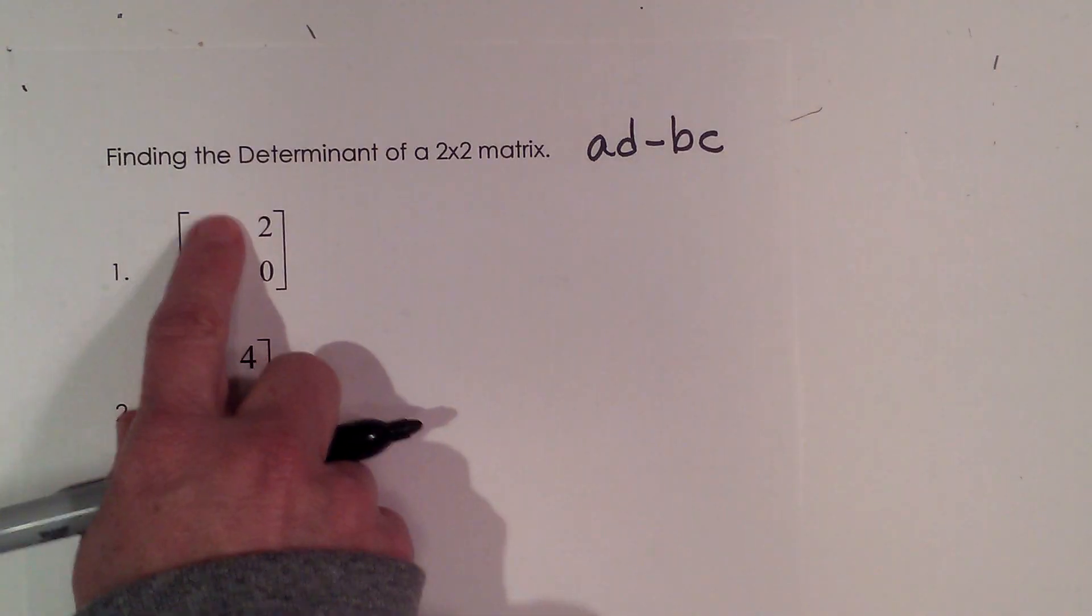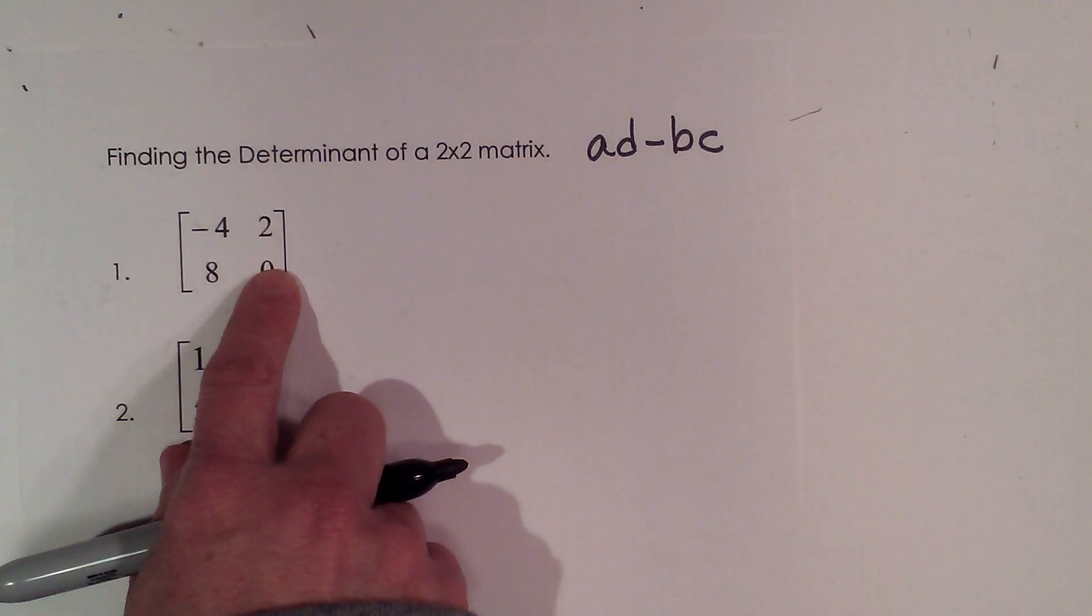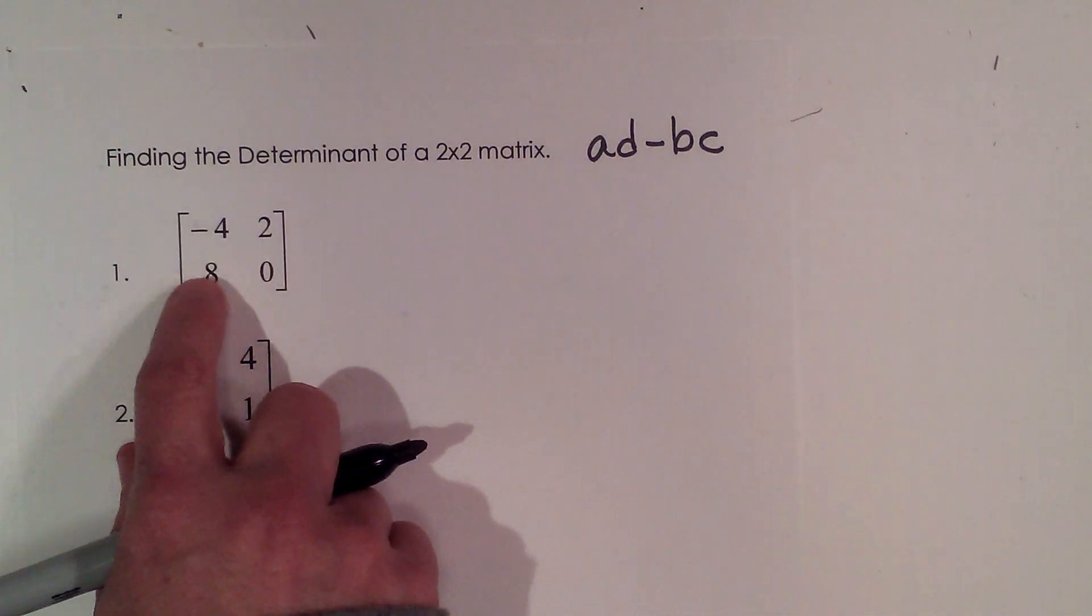Now what I'm going to do is I'm going to find the product of the first diagonal, a times d, and I'm going to subtract the product of the second diagonal, 8 times 2.